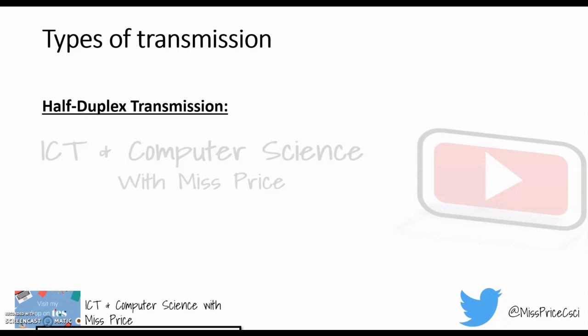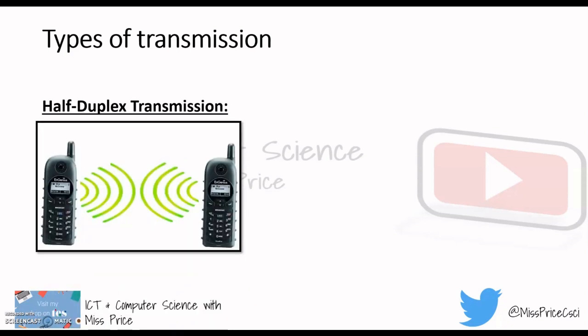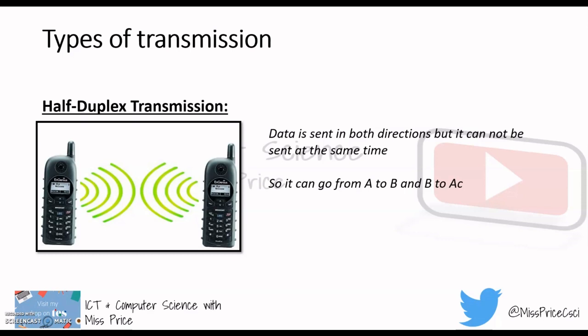Half duplex transmission — this will go in both directions, but not at the same time. A good example is a two-way radio. When I worked on a camp in America in the mountains of Pennsylvania, we had no mobile phone signal whatsoever, so the only way we could communicate was using radios. You can't speak at the same time — someone would speak, the other person would listen, then a signal or noise would indicate the other person stopped talking, and then you could start sending your transmission. So it can go in both directions, but only from A to B or B to A.